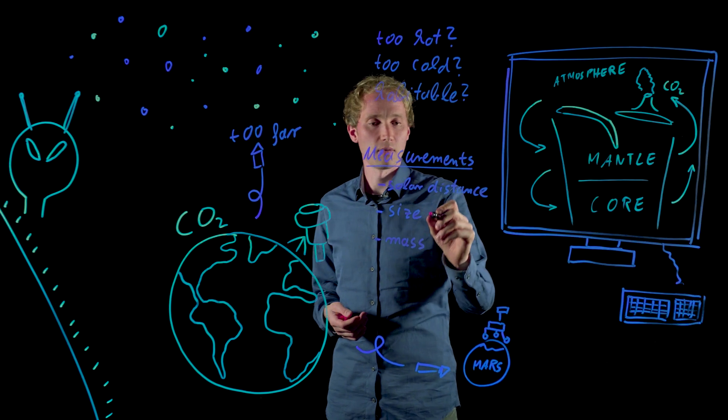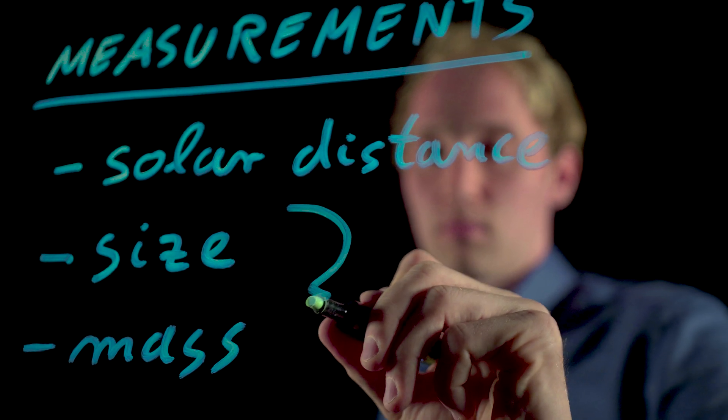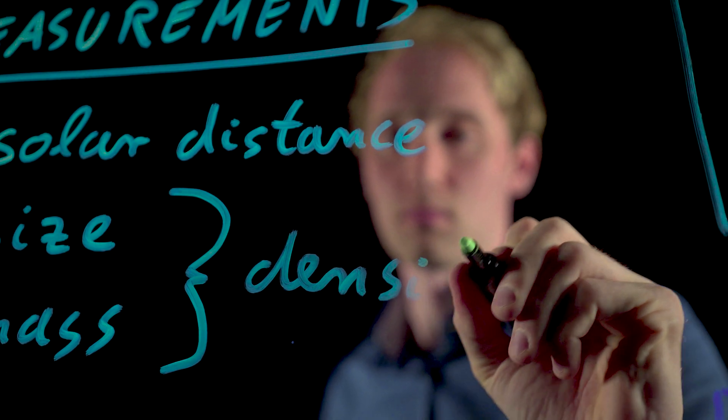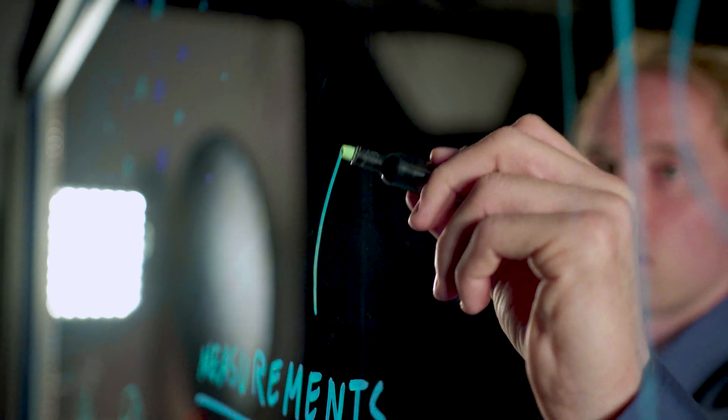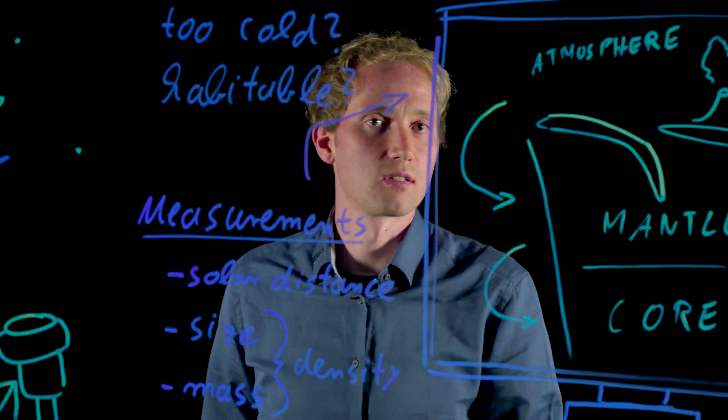And from the size and the mass, we have an idea about the mean density of the planet, which also gives us an idea about its composition. And we can use all of these parameters and put it into our model to see how the planet would evolve if you, for instance, change the size of the planet, the mass, or the distance to the star.